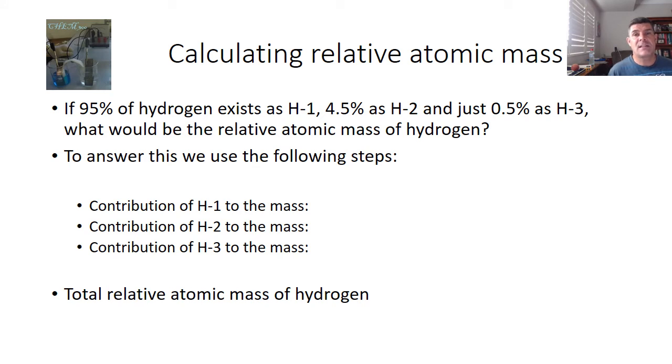Let's look at an example, a practical example. Now again, these numbers are not correct and you'll know that by looking at the periodic table, but what we're doing is looking at the process just for the moment. So here's the sort of question that you could get in terms of calculation of relative atomic mass. So 95% of hydrogen exists as hydrogen-1, 4.5% as hydrogen-2, and just 0.5% as hydrogen-3. What would be the relative atomic mass of hydrogen? So if you were given a question with these numbers, this is the process that you would go through.